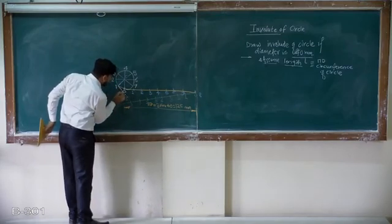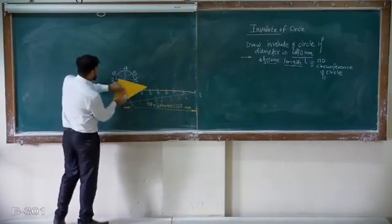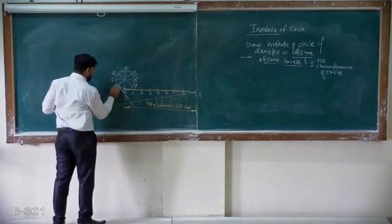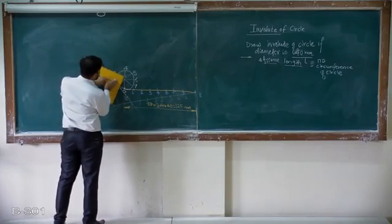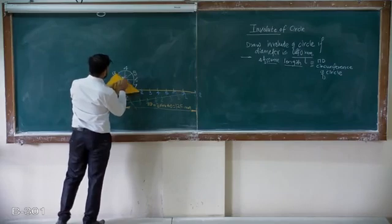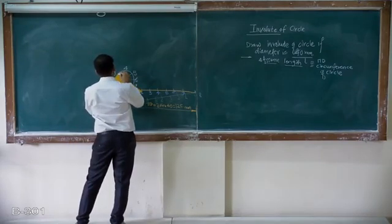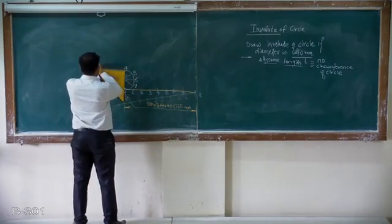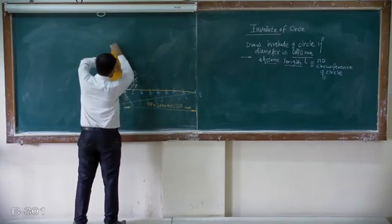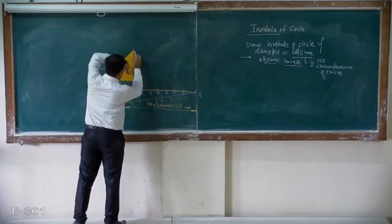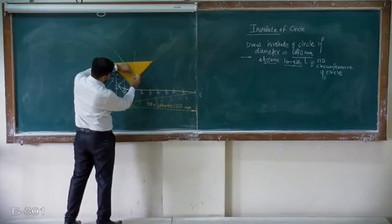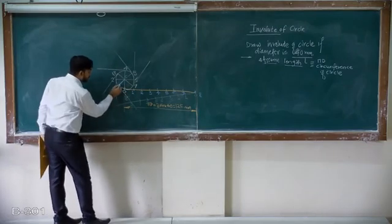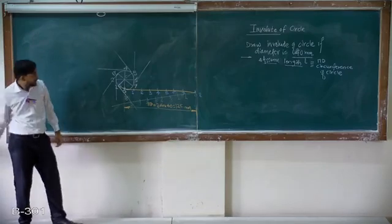At each point, keeping one edge of the set square parallel to the corresponding radius, the other edge will be perpendicular — draw the tangent there. So I'm going to draw a small tangent at each point and extend it. Similarly, keeping this edge parallel to this radius, draw the next tangent. Keep this edge parallel and draw the tangent at each of the 8 points. At the end, every radius and its tangent line should be at 90 degrees.